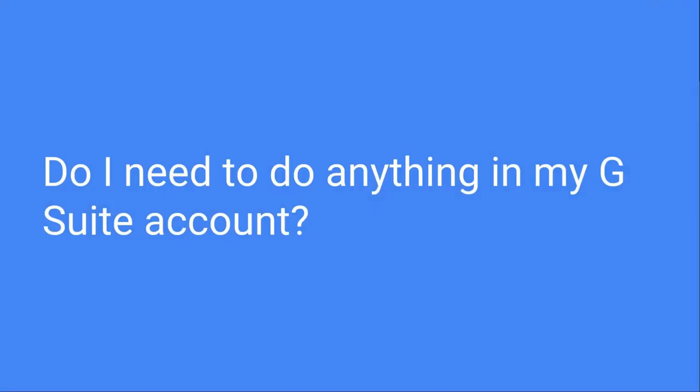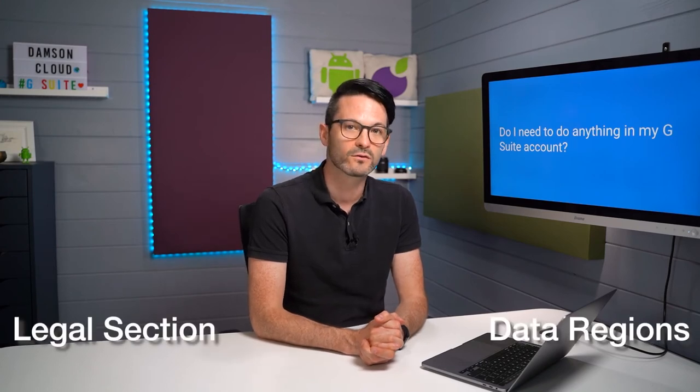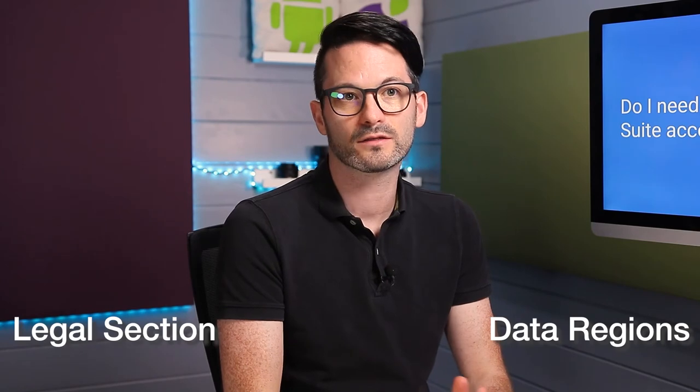So, what do you need to do within your G Suite account? There are two things to check: the legal section and data regions. In the legal section, found within the administrative control panel — you'll need to be a super admin — search for 'legal' and it will show under account settings the legal and compliance section. In there you'll find the EU Standard Contractual Clause, and you can see if it's been signed. If not, you can agree and sign it. We advise having your legal teams review this first.